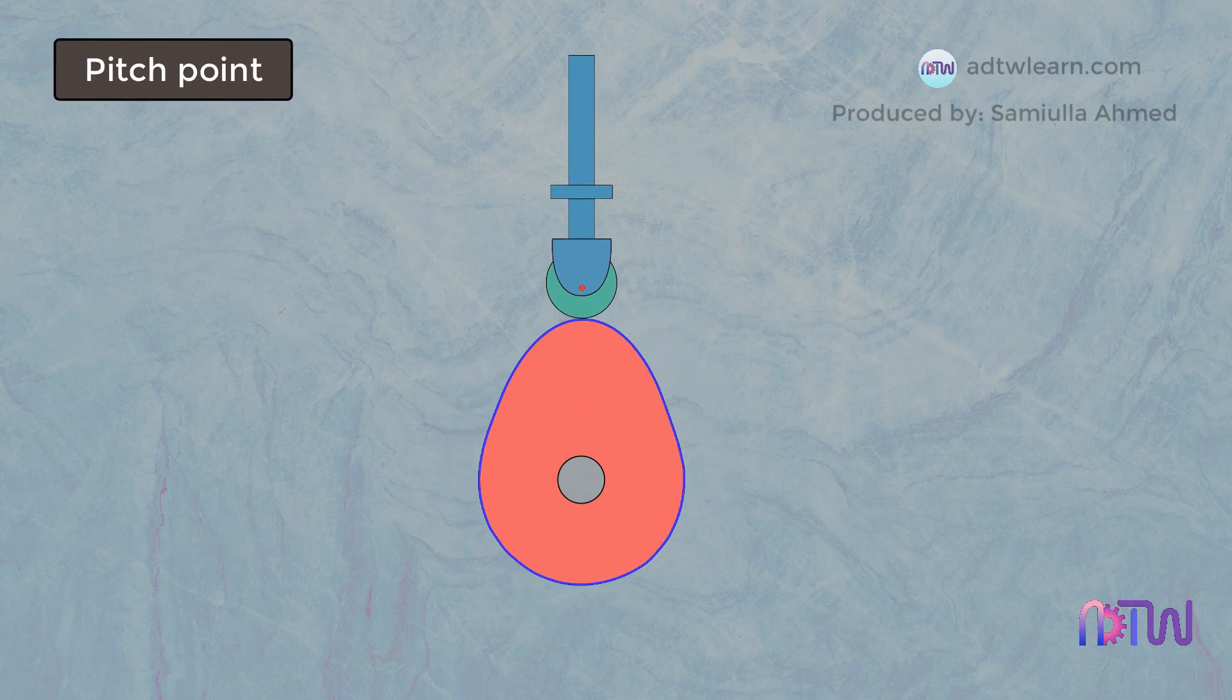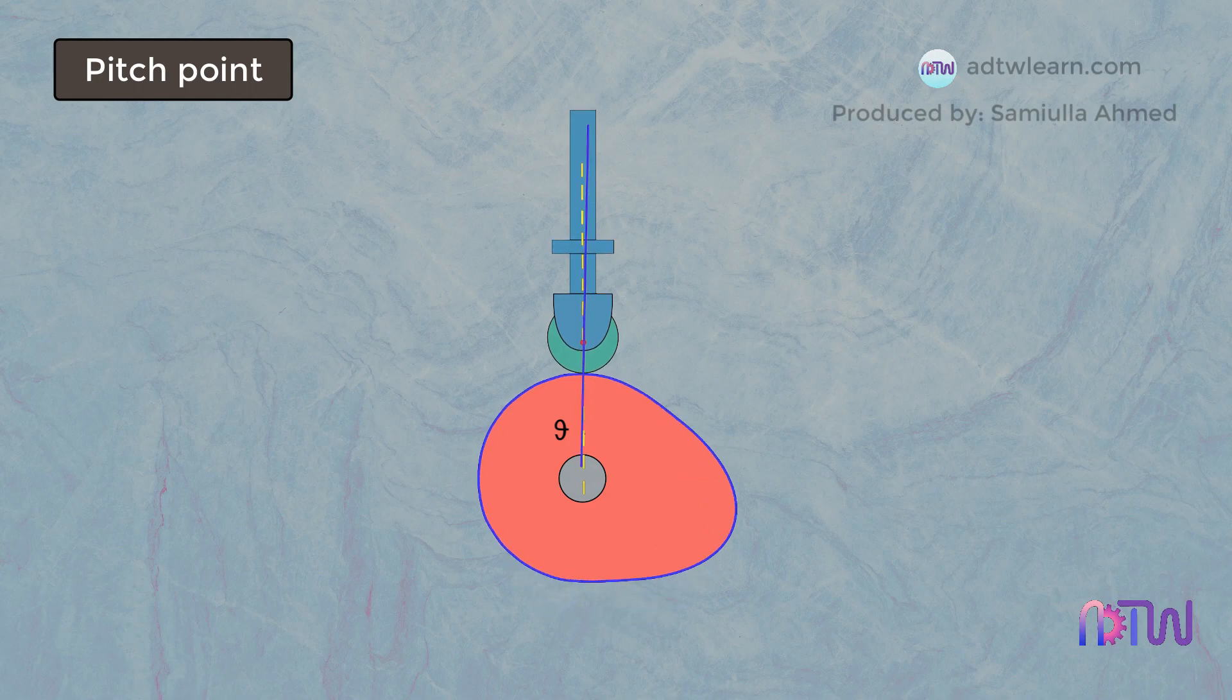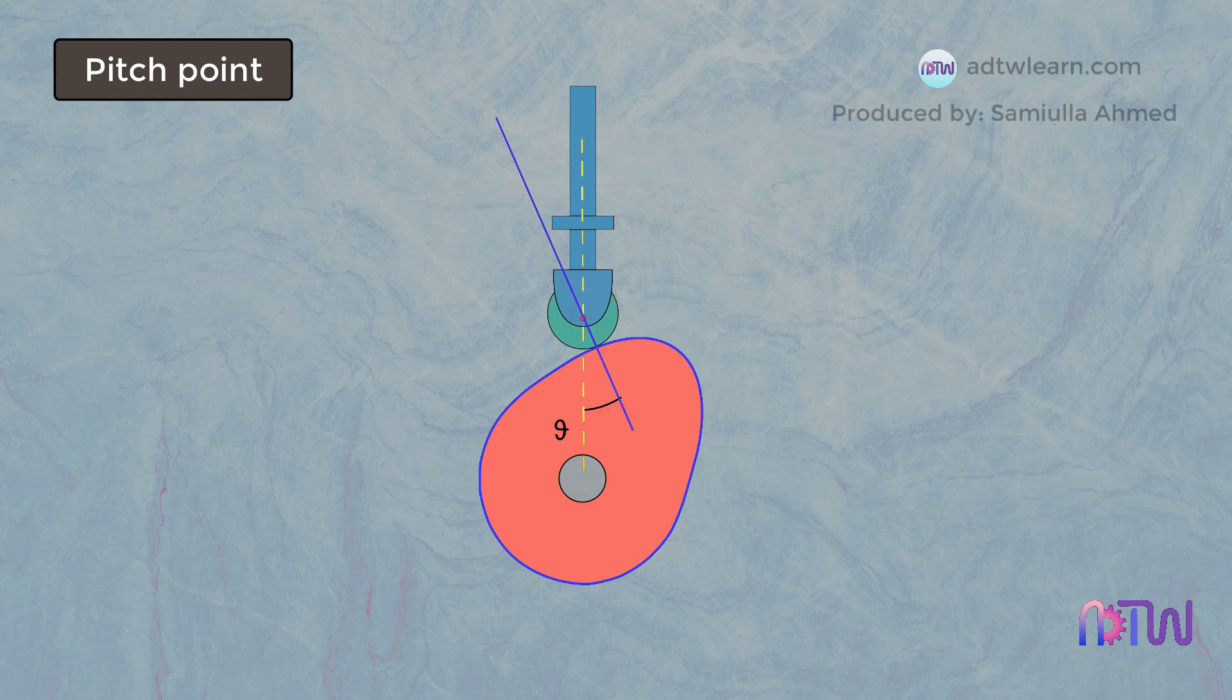Pitch Point. As we saw, each point on the cam surface has a different pressure angle, and its magnitude at all the instances of the follower motion will be changing. Therefore there will be a point where the magnitude of the pressure angle is maximum. A pitch point is a point corresponding to this maximum pressure angle.